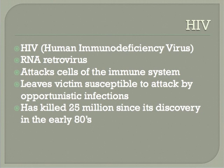The immunodeficiency virus, or HIV, has killed more than 25 million people since its discovery in the early 1980s. AIDS, or acquired immunodeficiency syndrome, results from infection by HIV, which compromises its victim's immune system, leaving them susceptible to attack by opportunistic infections. It is a devastating disease that has ravaged populations throughout the planet and continually foiled doctors and drug makers for almost three decades.